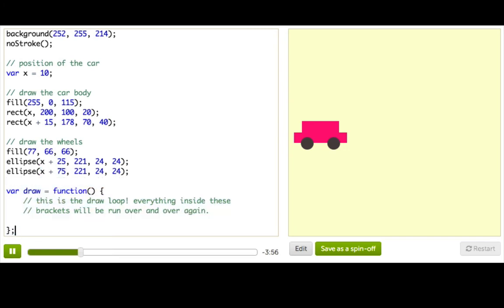This thing here is called a function definition. You'll learn all about those later, so for now, kind of just look at it and memorize what it looks like. The important things to notice are this word, draw, and these brackets. This opening bracket here, and this closing bracket here.